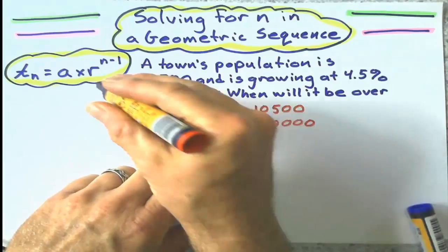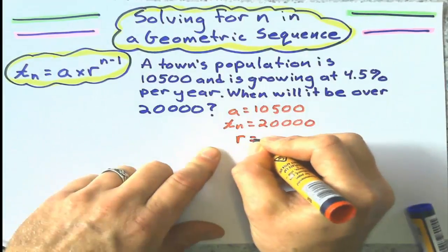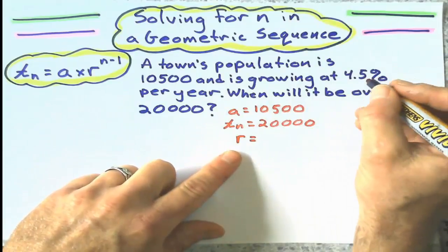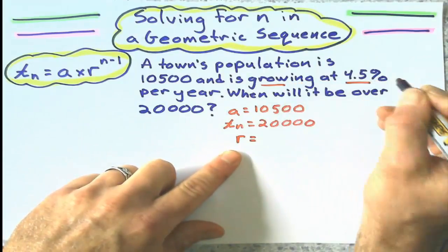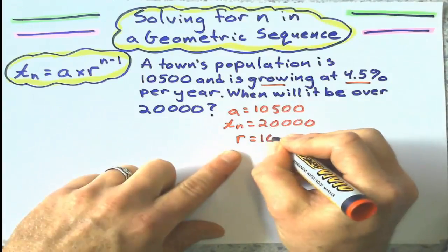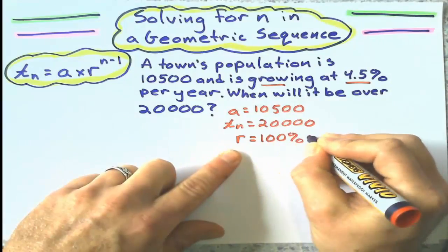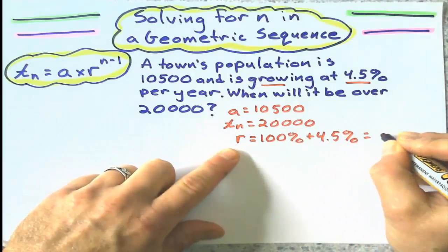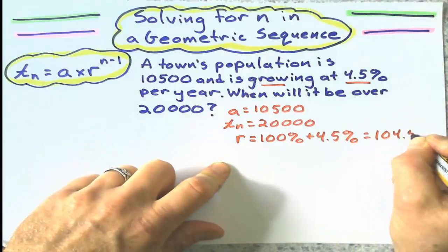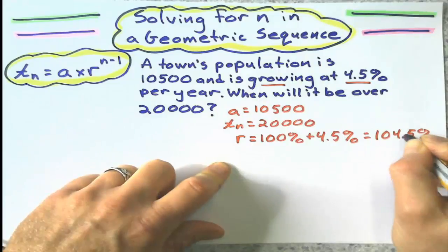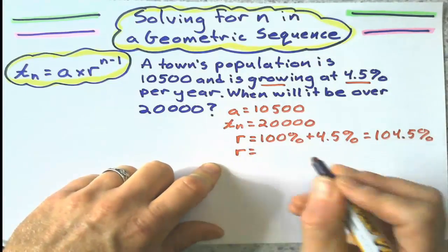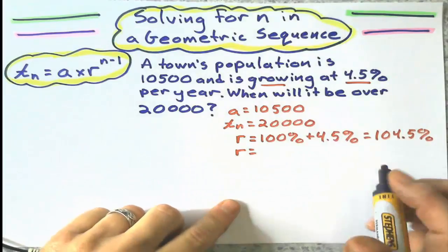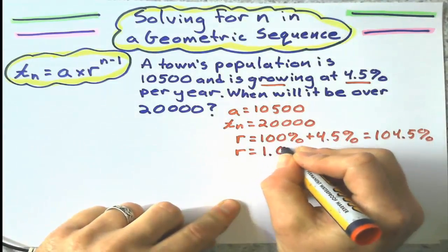Common ratio, and this is what I've been going over, 4.5% increase. 4.5% growing at 4.5% means that it's 100% plus 4.5%, which equals 104.5%, which means my common ratio as a decimal, which I wanted as a decimal, is 1.045.